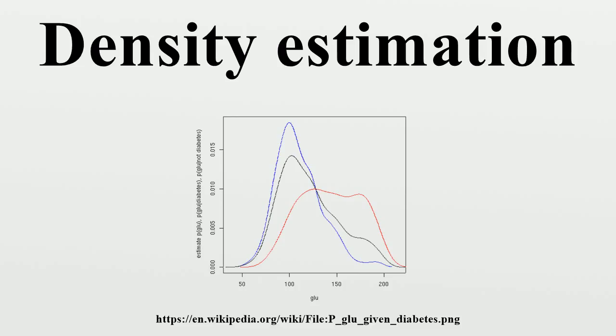The conditional density estimates are then used to construct the probability of diabetes conditional on glucose. The glucose data were obtained from the MASS package of the R programming language. Within R, Pima.trn and Pima.te give a fuller account of the data.